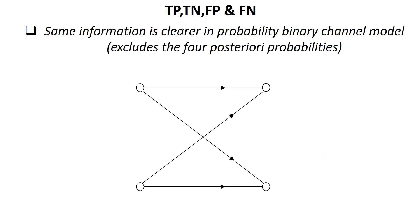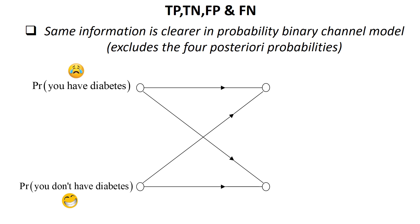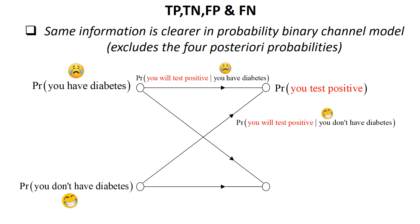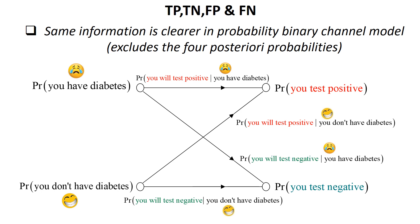We can draw this binary channel model, which is easier to visualize and comes from engineering. On the left are the inputs: probability of having diabetes and probability of not having diabetes. On the right are the outputs: probability of testing positive and negative. The probability of testing positive equals P(diabetes) × P(positive|diabetes) plus P(no diabetes) × P(positive|no diabetes) — true positives plus false positives coming through. Similarly for testing negative: true negatives plus false negatives.